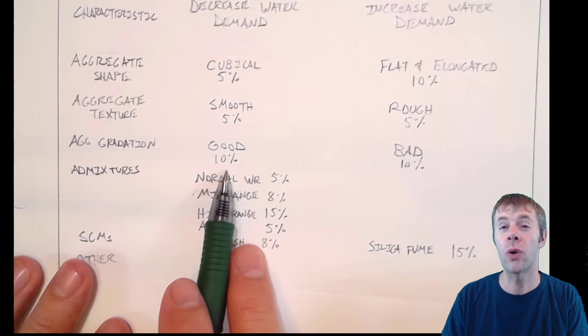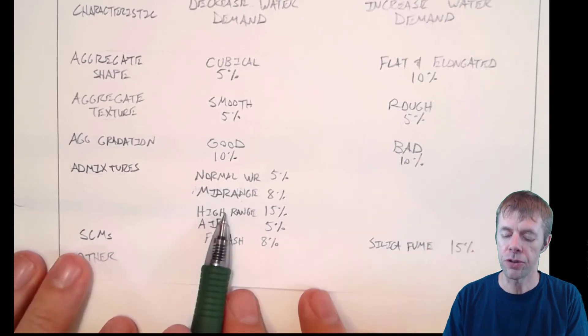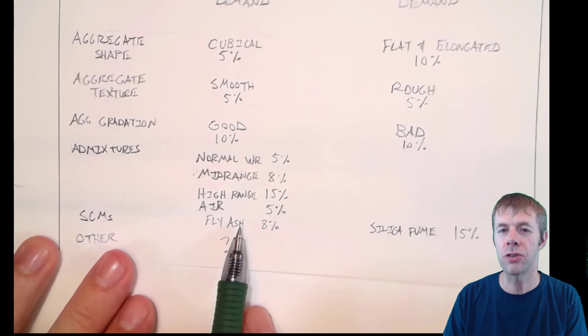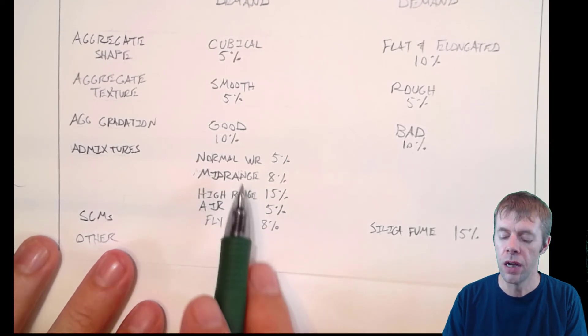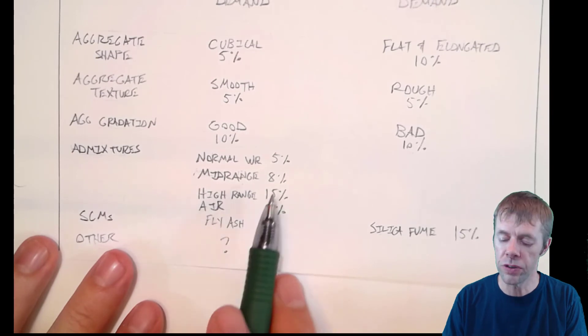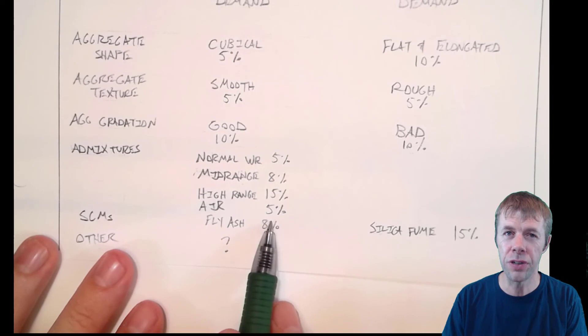we'll talk about that in a tarantula mix design procedure. And what's a bad one? Admixtures. Oh my gosh. It's very common to use admixtures in concrete today. And here you can see normal range, mid-range, and high-range water reducers. All of these things will reduce your water demand by some amount. Air content will as well.